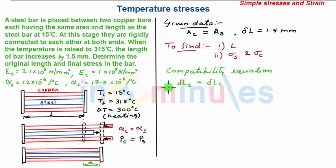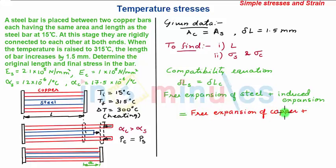We expand this equation of delta L for steel as well as copper. We have free expansion of steel plus induced expansion equals free expansion of copper plus induced contraction.